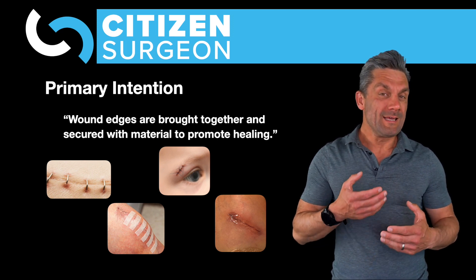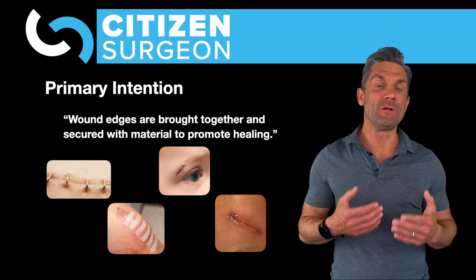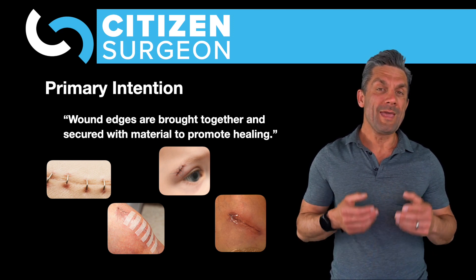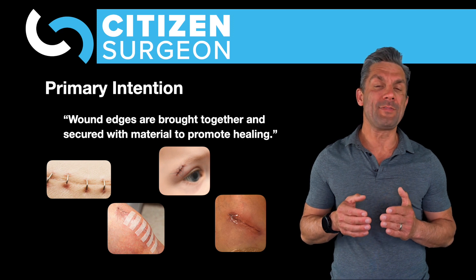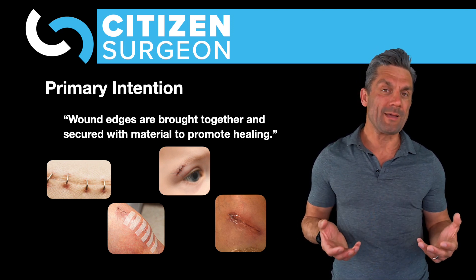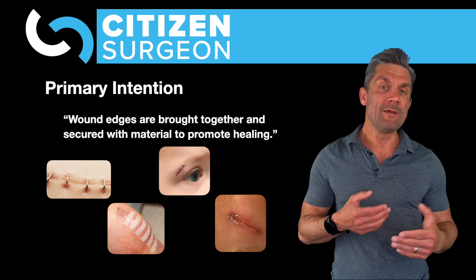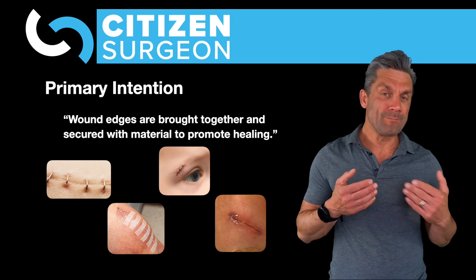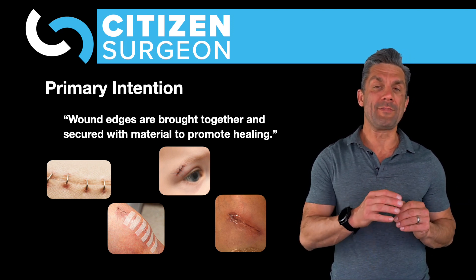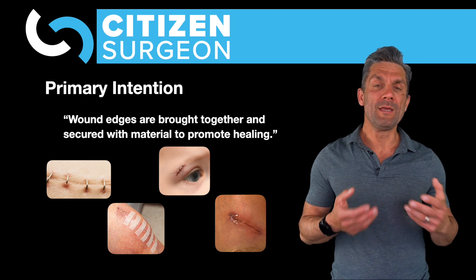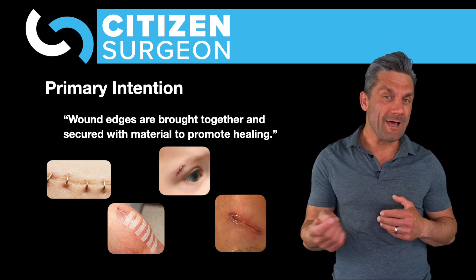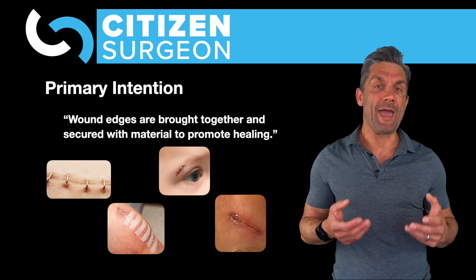Dermabond, from a strength perspective, is similar to closing something with a 5.0 monocryl suture. Dermabond can give you really nice epithelial edge apposition. For me, if I'm doing a laparoscopic case, I'll usually close with a deep 4.0 monocryl in the deep dermal layer, and then close the epithelial edges with dermabond. You can see here that dermabond was used to support the closure of a running subcuticular stitch on the abdomen.